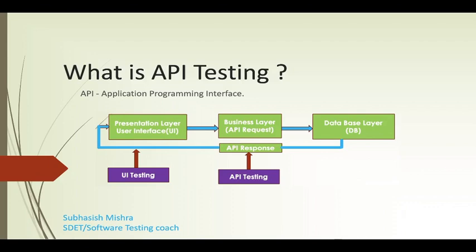There are many aspects of API testing, but the main purpose is to check the functionality, reliability, performance, and security of programming interfaces. We send a call to the API, get a response, and validate that response. API tests are very different from GUI tests and don't concentrate on the look and feel of the application — they mainly focus on the business logic layer of the software architecture.